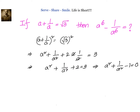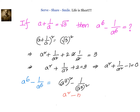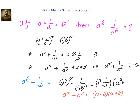Now let us go back to what we need to find out. Can we write a⁶ - 1/a⁶ as (a³)² - (1/a³)²? This is like the formula a² - b², which can be written as (a - b)(a + b). That means we can write it as (a³ - 1/a³)(a³ + 1/a³).